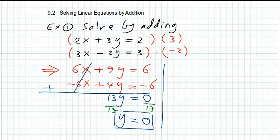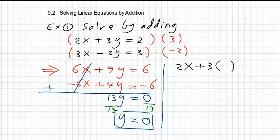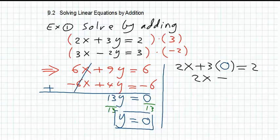So let us do that. If we choose the first equation: 2x plus 3, and substitute with the value of y which we found — which was zero — equals two. Three times zero is zero. So 2x plus zero is 2x, which is equal to two. To find x, divide both sides by two. You will find that x is equal to one.